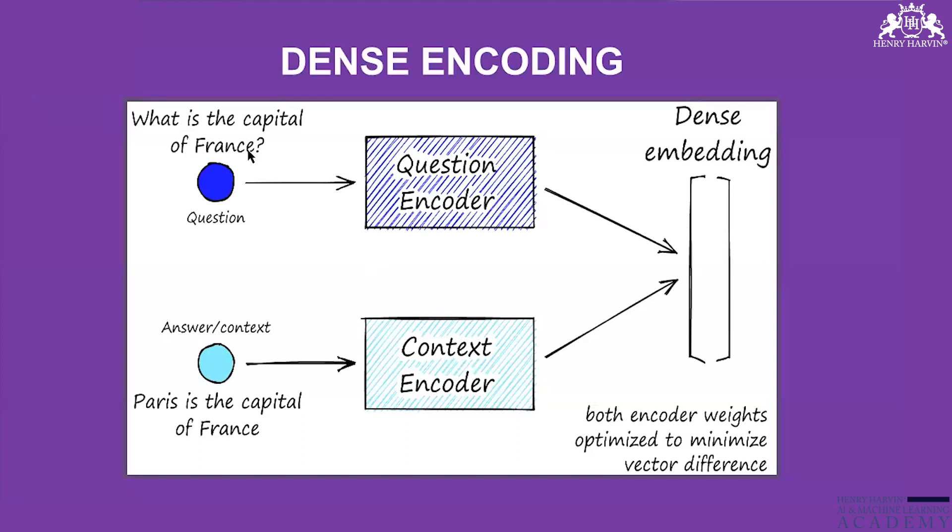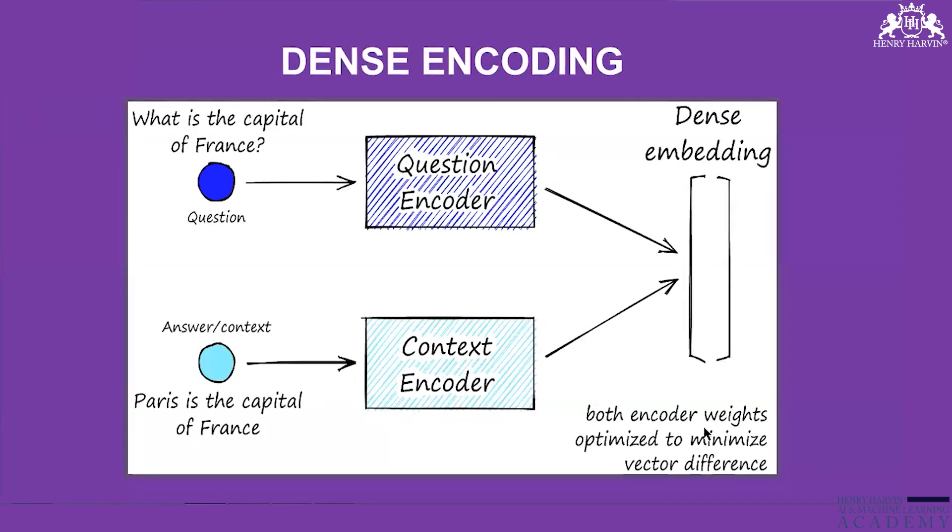Dense Encoder. What is the capital of France? It is the question. The encoder technique will read the whole question, put it in the dense embedding model, and both encoder weights optimize to minimize vector difference. Then the context encoder provides the answer.